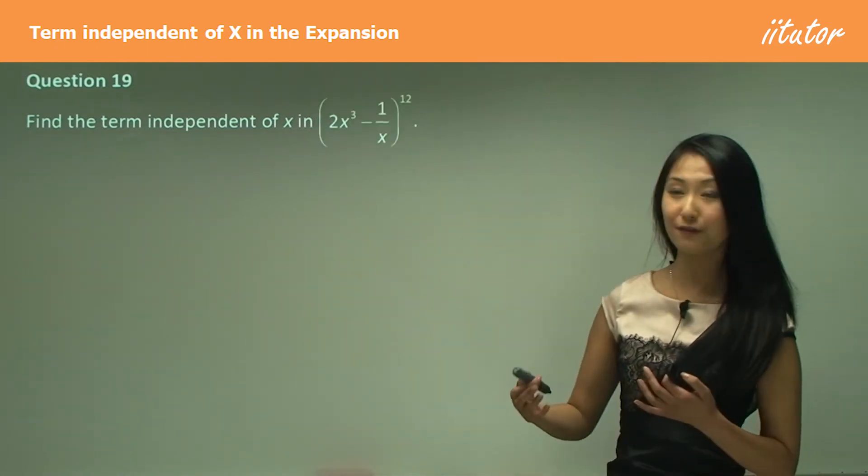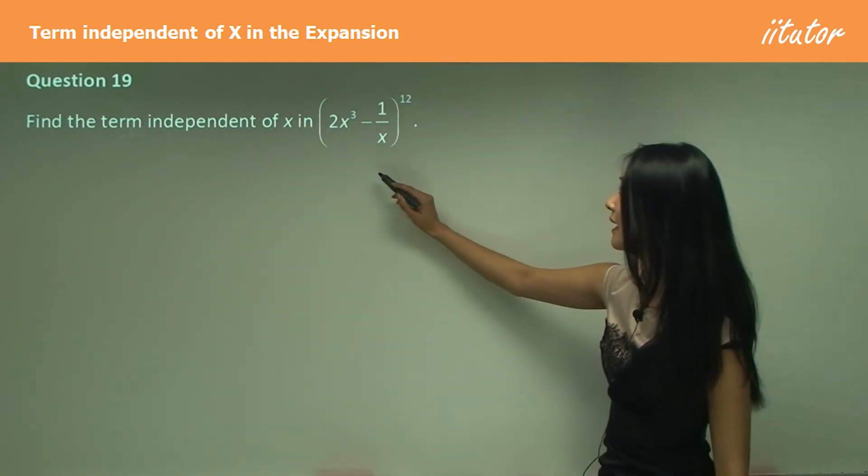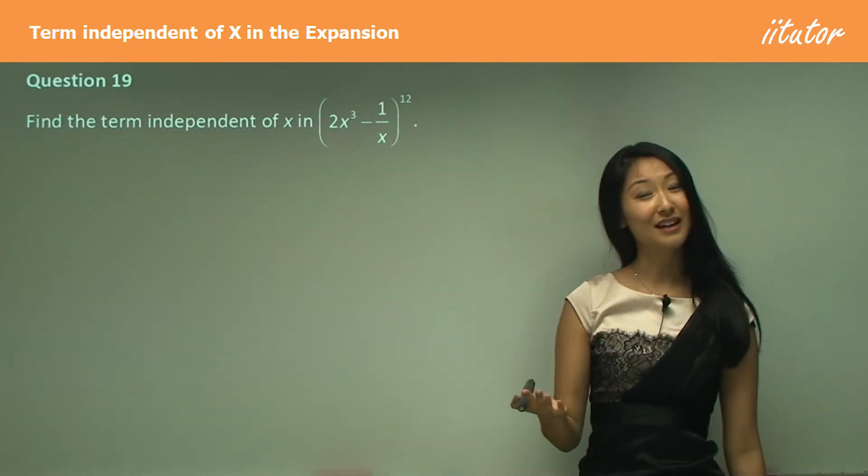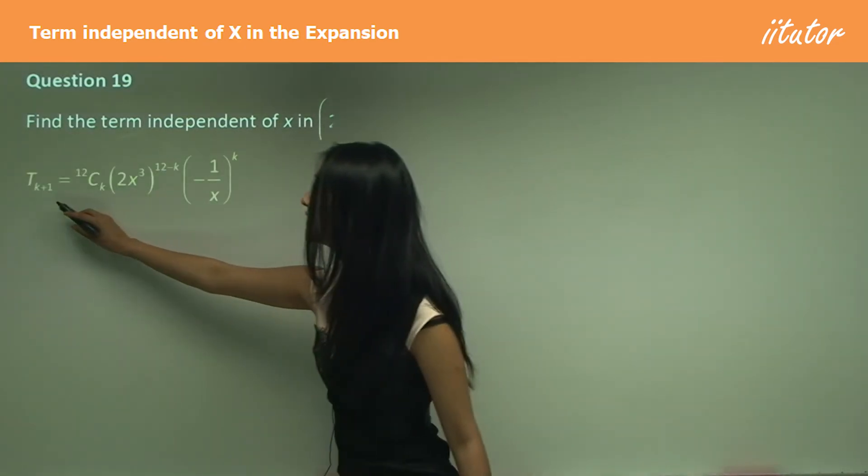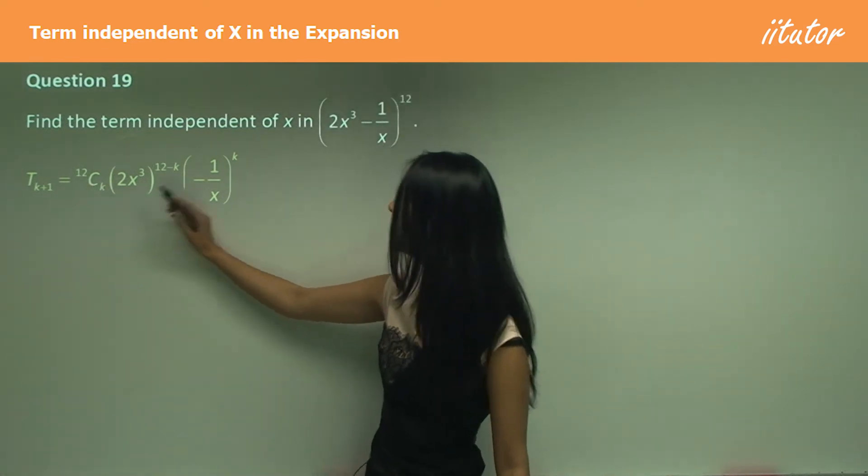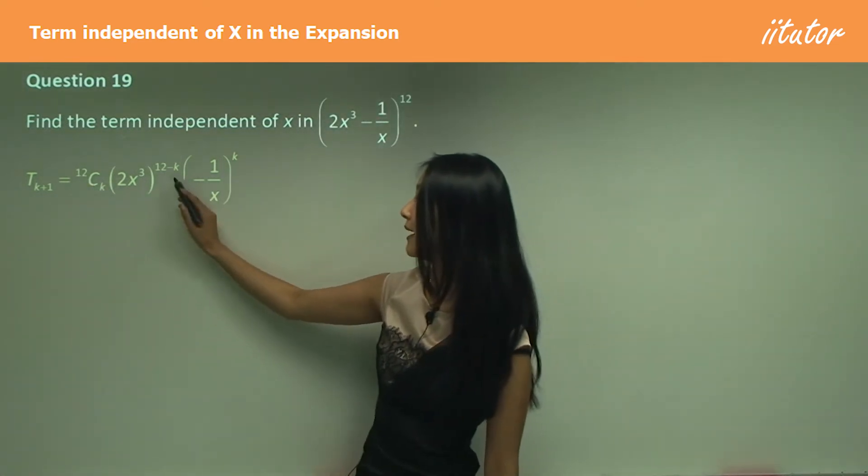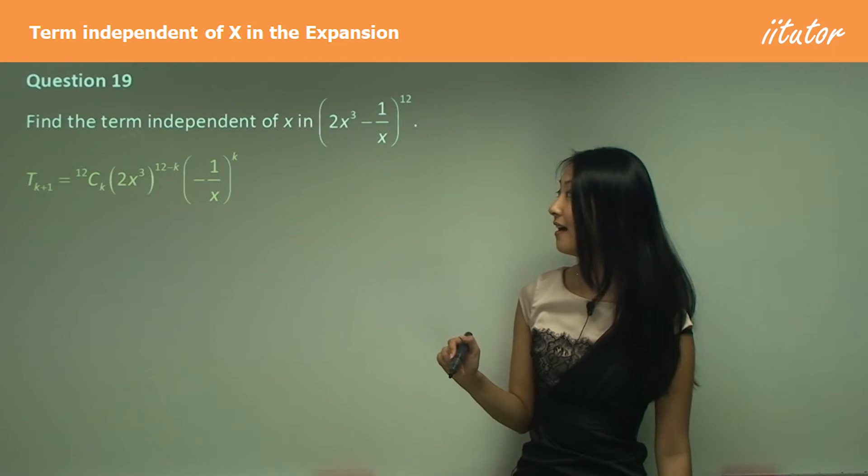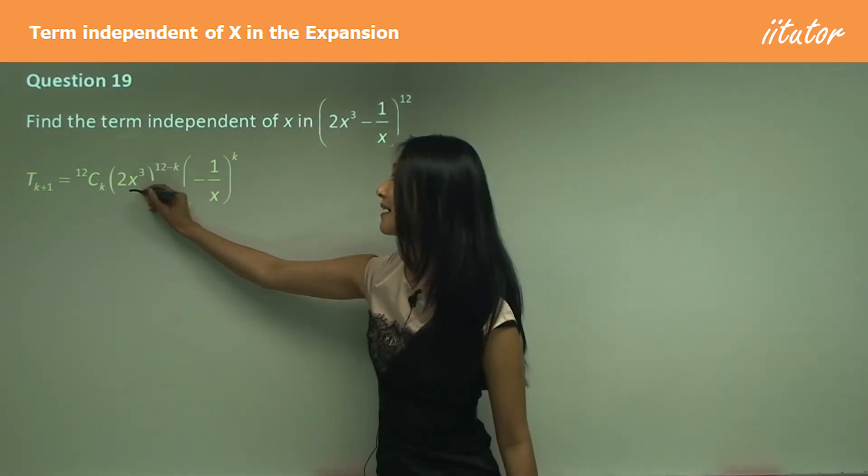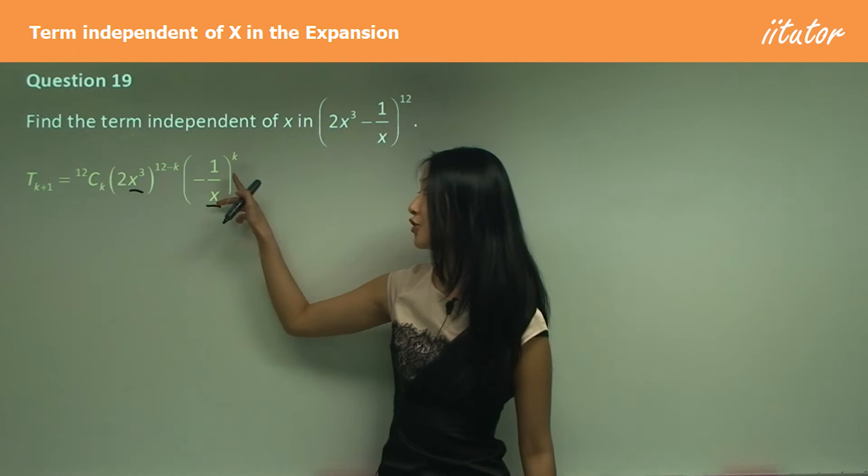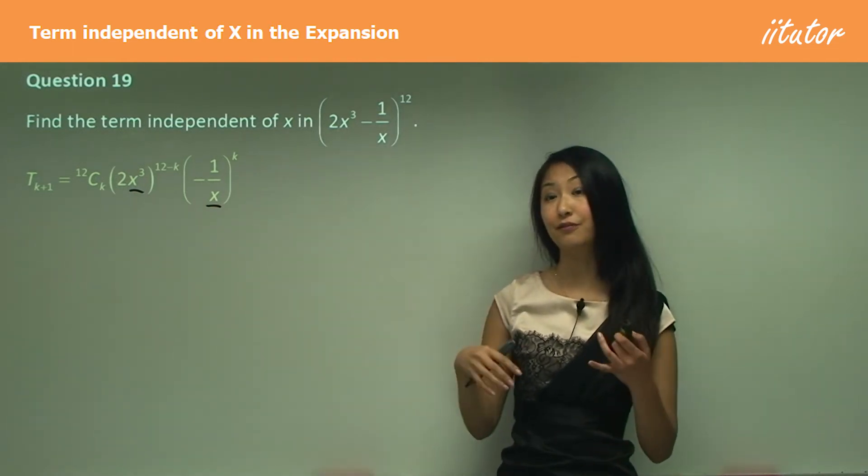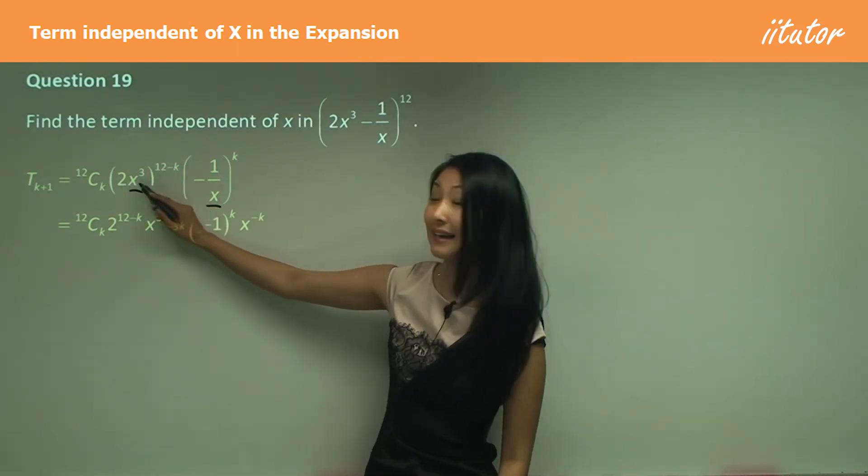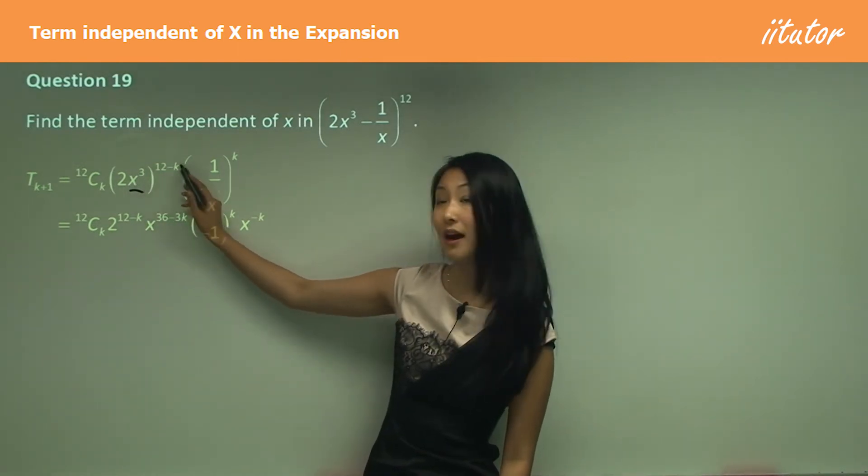Find the term independent of x in (2x³ - 1/x)^12. First thing we need to do is find the general term: 12Ck times (2x³)^(12-k) times (-1/x)^k. Because we have x and x, I need to split those up and then simplify it.